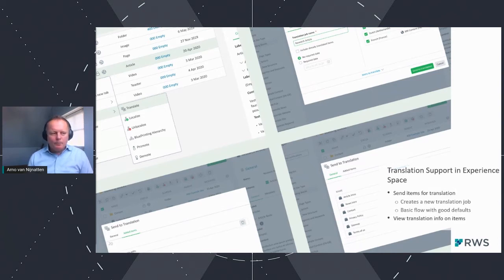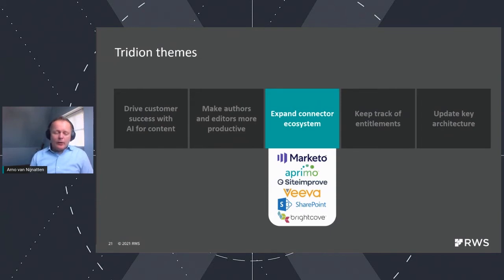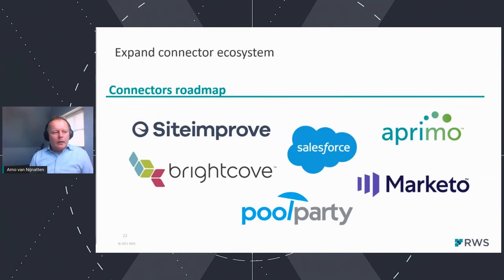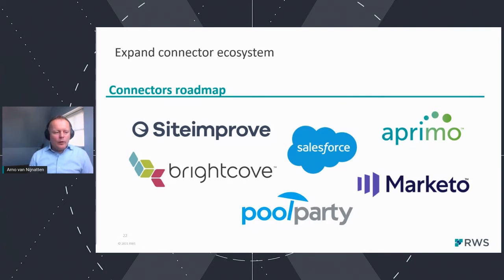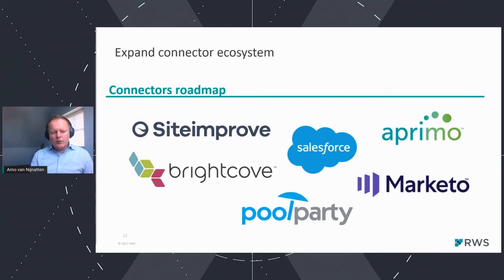The third theme is expanding the connector ecosystem. Additional connectors and functionality using the Tridion Integration Framework include: marketing resource management with the Primo MRM connector; digital quality management with Siteimprove to measure and improve SEO, accessibility, and content performance; a Marketo and Salesforce Marketing Cloud connector for marketing automation; a Brightcove connector for online video platforms; and Pool Party taxonomy management support, which includes smart tagging, faceted search, and search suggestions capabilities.